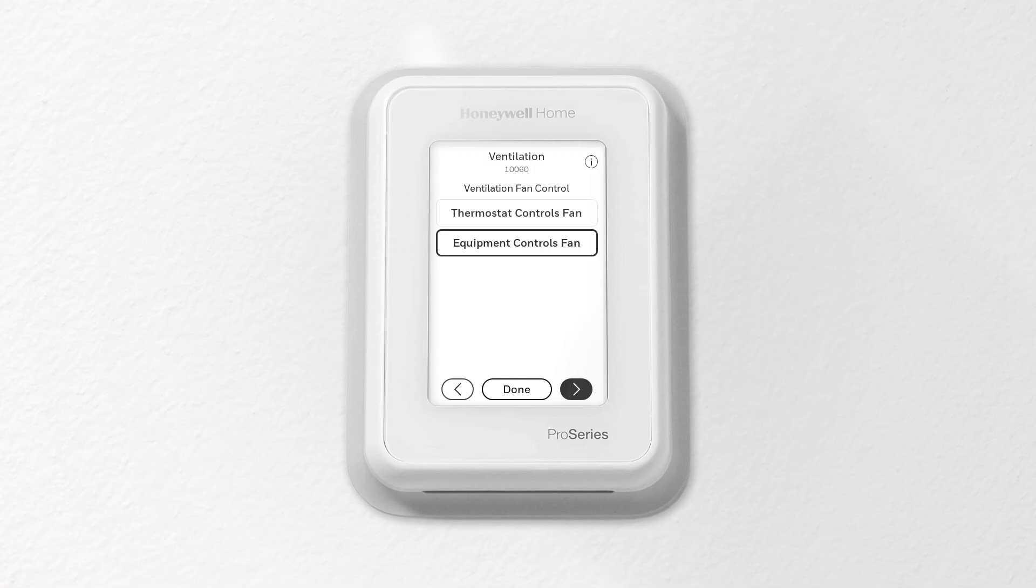Once wiring is complete, you will need to configure the T10 Plus. Go into ISU settings. For a zone system, set the thermostat to equipment control fan for ISU 10060.